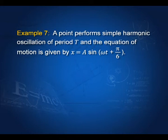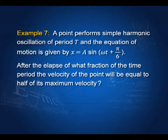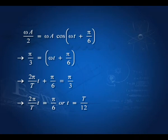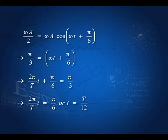A point performs simple harmonic oscillations of period T, with equation x = A·sin(ωt + π/6). After what fraction of the time period is the velocity equal to half its maximum value? The velocity is v = ωA·cos(ωt + π/6), and its maximum is ωA. Setting ωA/2 = ωA·cos(ωt + π/6) gives cos(ωt + π/6) = 1/2, so ωt + π/6 = π/3, which gives t = π/(6ω) = T/12. The answer is T/12.